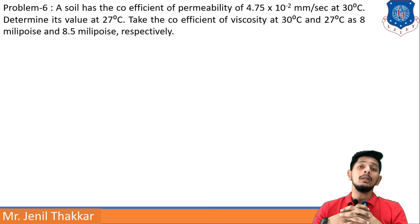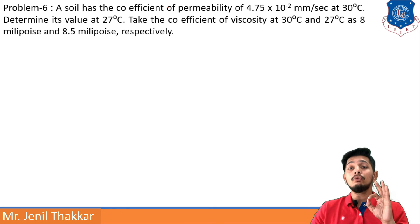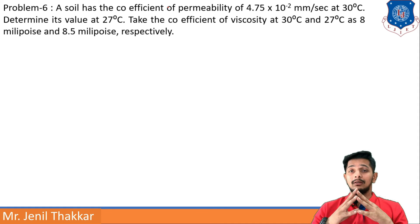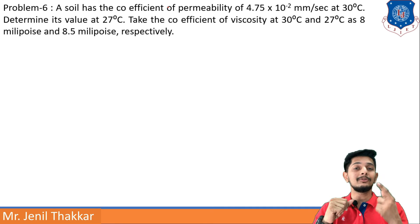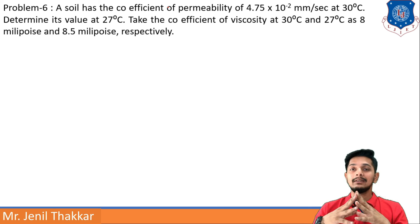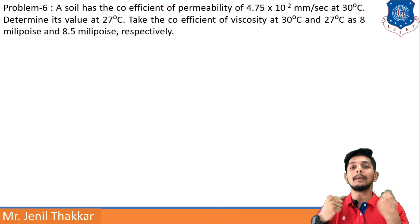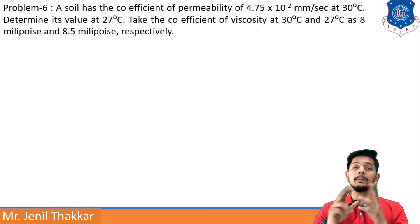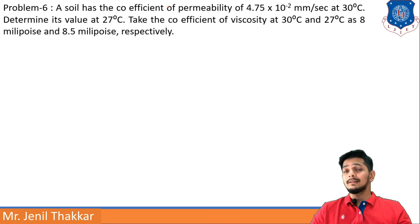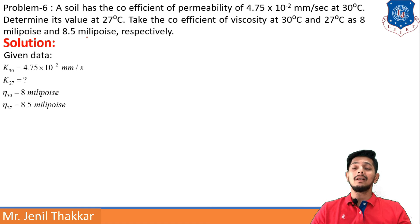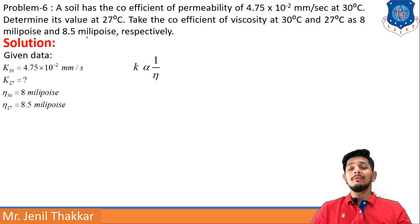Viscosity is resistance to flow. If permeability is very low, viscosity is very high, and vice versa — they are inversely proportional. Given: k30 is known, k27 is unknown, η30 = 8 millipoise, η27 = 8.5 millipoise. Since k ∝ 1/η, we can write k1/k2 = η2/η1.